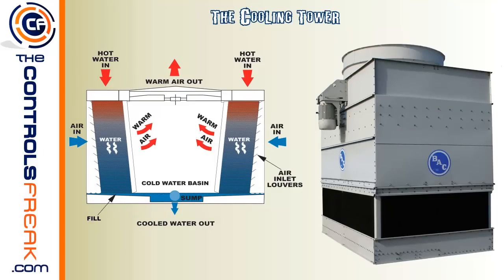Here we've got the cooling tower. Right now we've got two images: a diagram of the cooling tower as well as an actual cooling tower. They're very similar in function. The cooling tower's purpose is to cool down the hot water coming out of the condenser side of the centrifugal chiller. Here in our diagram, hot water comes into the cooling tower and either drips down the side or is sprayed through spray heads that disperse it in a wide spray across the cooling tower.